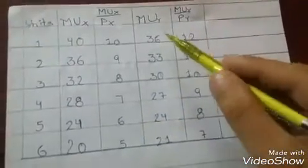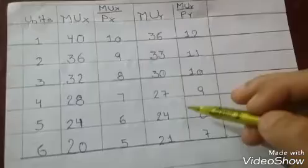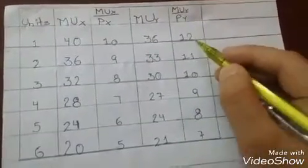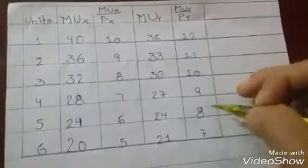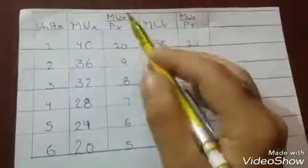MU Y values are 36, 33, 30, 27, 24, 21, and MU Y upon price PY is 12, 11, 10, 9, 8, and 7.